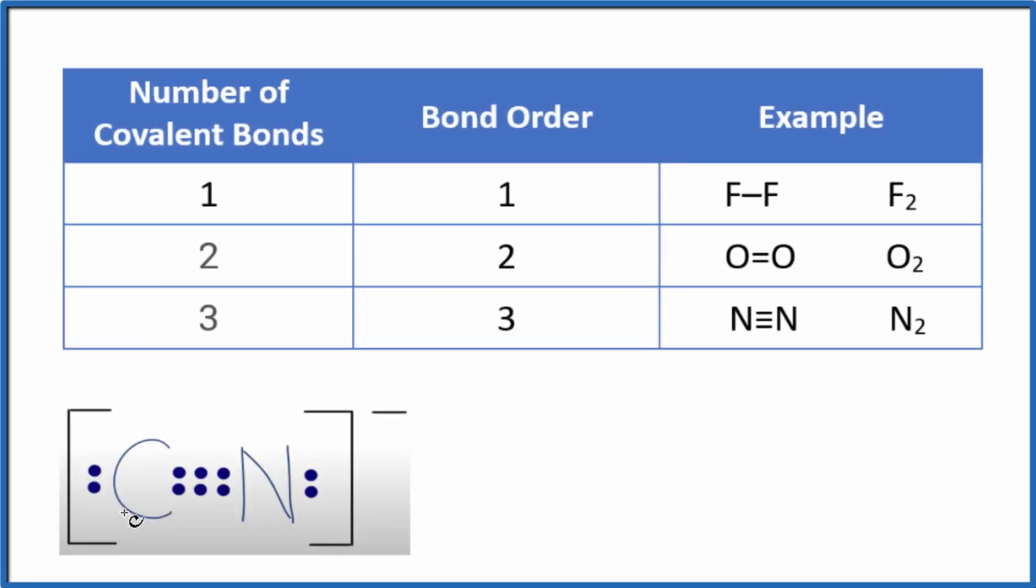Let's take a look at the bond order for CN minus. This is the cyanide ion. So to find the bond order for the cyanide ion,